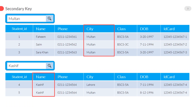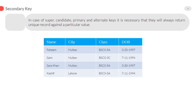Keep one thing in mind: a particular access to the value of a secondary key may return a single record — it is possible that only a single record fulfills the condition. It is not necessary for a secondary key to always return a unique record. This is an important point to remember. In the case of super, candidate, primary, and alternate keys, it is necessary that they will always return a unique record against a particular value.